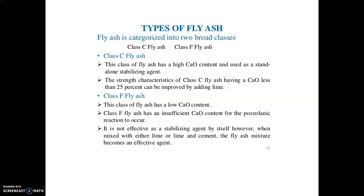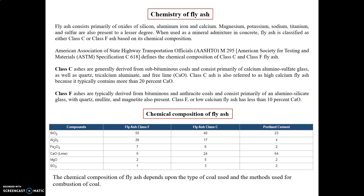Regarding color: fly ash can range from dark gray depending on its chemical and mineral constituents. Tan and light colors are typically associated with high lime content. A brownish color is typically associated with iron content. A dark gray to black color is typically attributed to elevated unburned carbon content. Fly ash color is usually very consistent for each power plant and coal source.